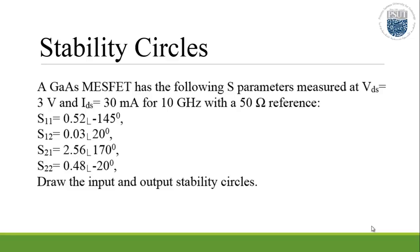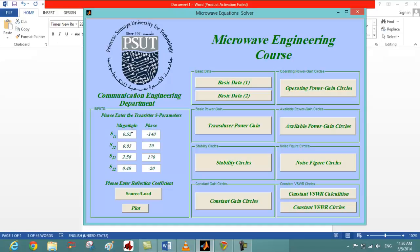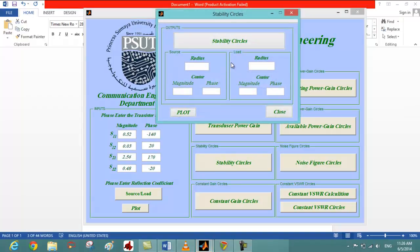The S-parameters have already been entered: S11, S12, S21, and S22. We click on stability circles, then we click on stability circles again to give us the radius of the source and the center magnitude phase of the source.